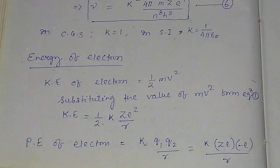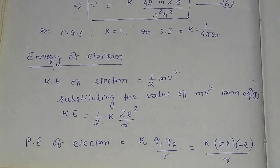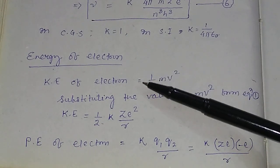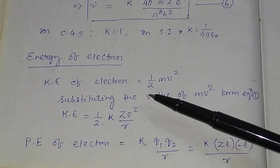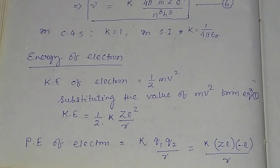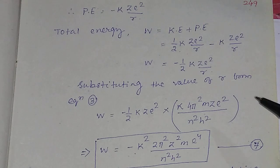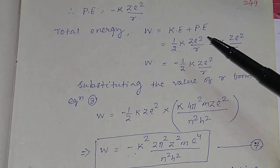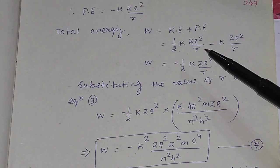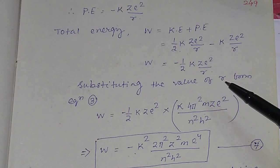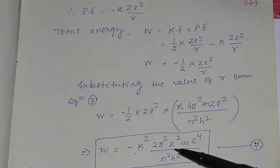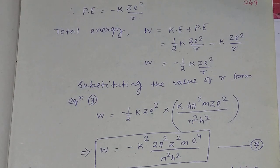To find the frequency of electromagnetic radiation, first calculate the kinetic energy of the electron, then the potential energy of the electron. Then compute the total energy as the sum of kinetic and potential energy, substituting the value of the orbital radius to obtain the total energy of the electron in that orbit.